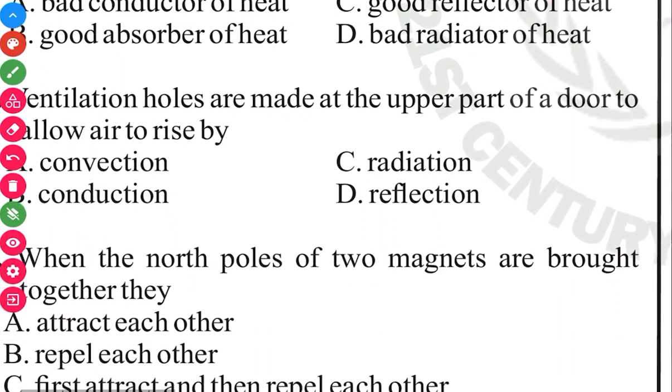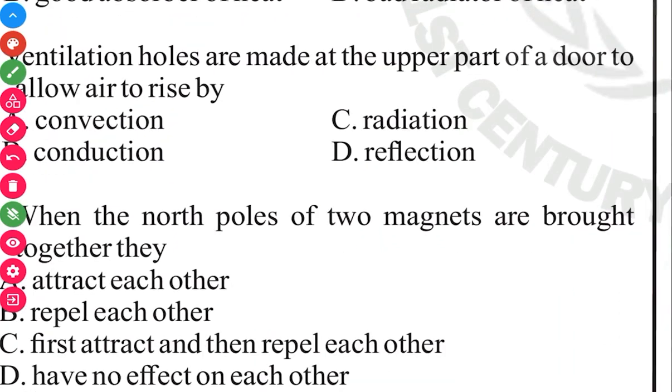When north poles of two magnets are brought together, they repel each other. The answer in 3, 2, 1 is repel each other. So like poles repel, unlike poles attract. North and south would attract. North and north or south and south repel.